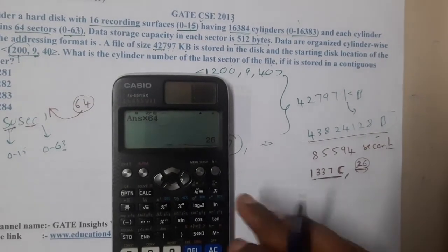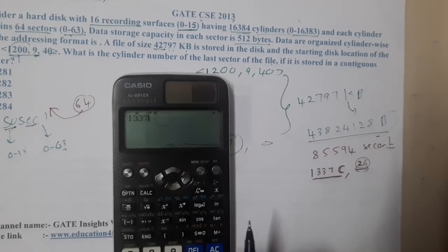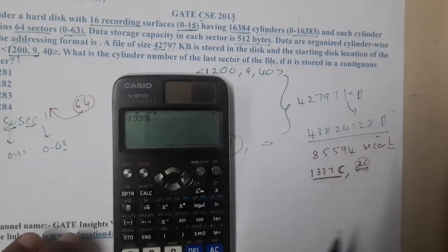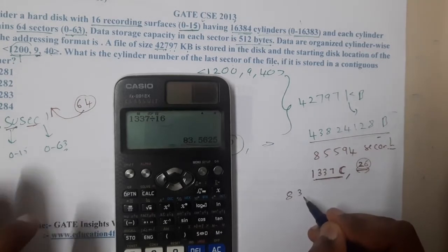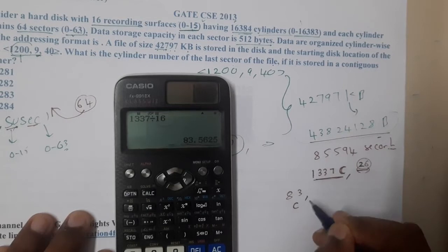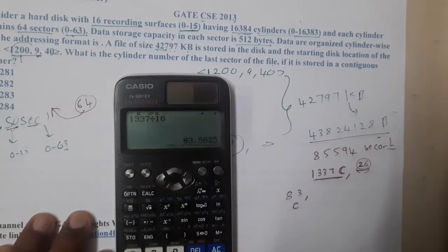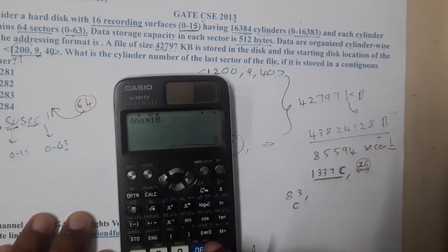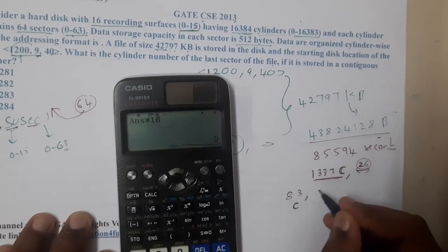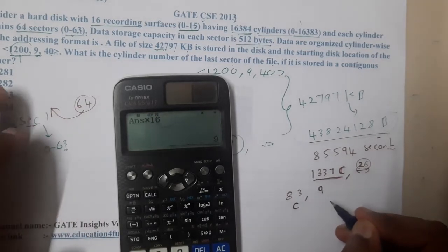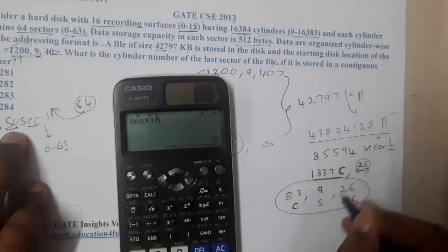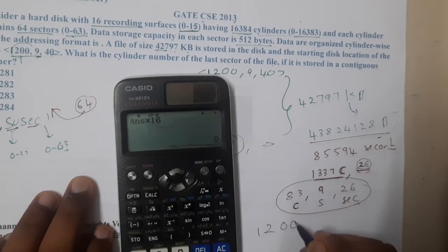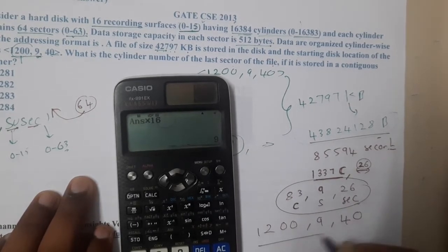Now, how many cylinders do those 1,337 surfaces occupy? Each cylinder has 16 surfaces, so divide 1,337 by 16, giving 83 cylinders. The remainder is: 1,337 minus 83×16 = 9 surfaces. So the file occupies 83 cylinders, 9 extra surfaces, and 26 extra sectors beyond the starting location.